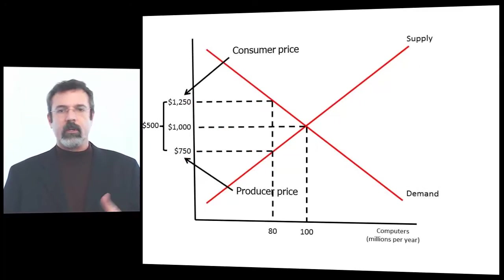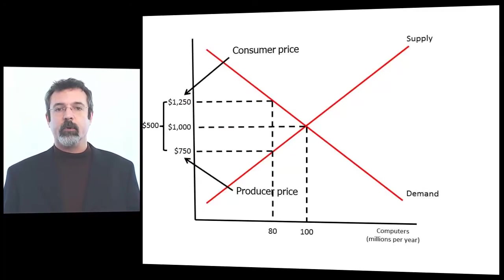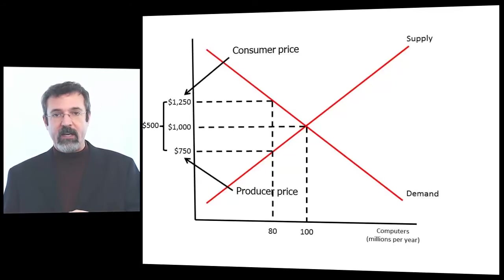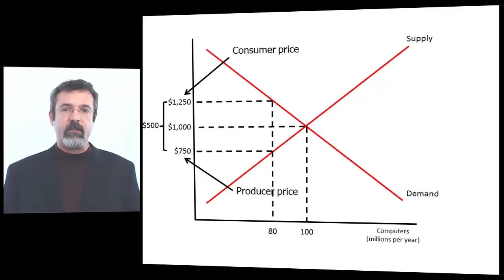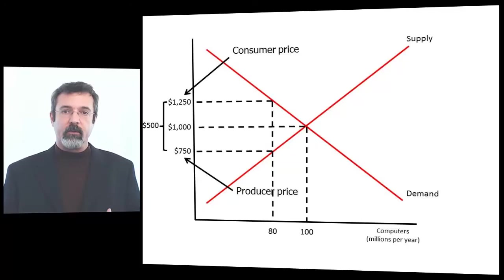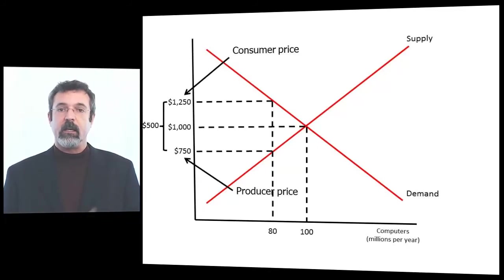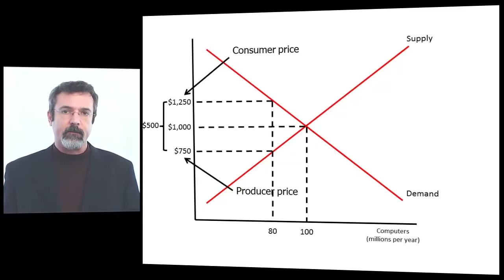In our example, the producers and consumers shared the $500 tax burden evenly. Without the tax, consumers paid $1,000 and producers received $1,000. With the $500 tax, consumers paid $1,250 and producers received $750 — so each of them paid $250 of the tax.